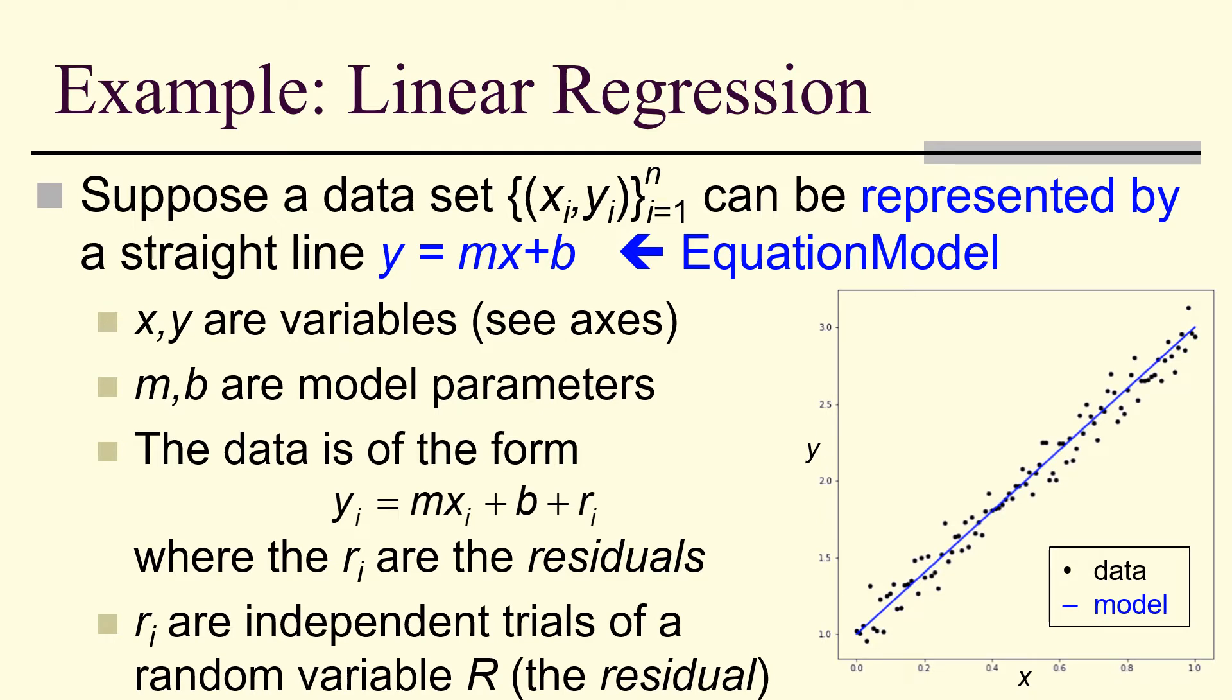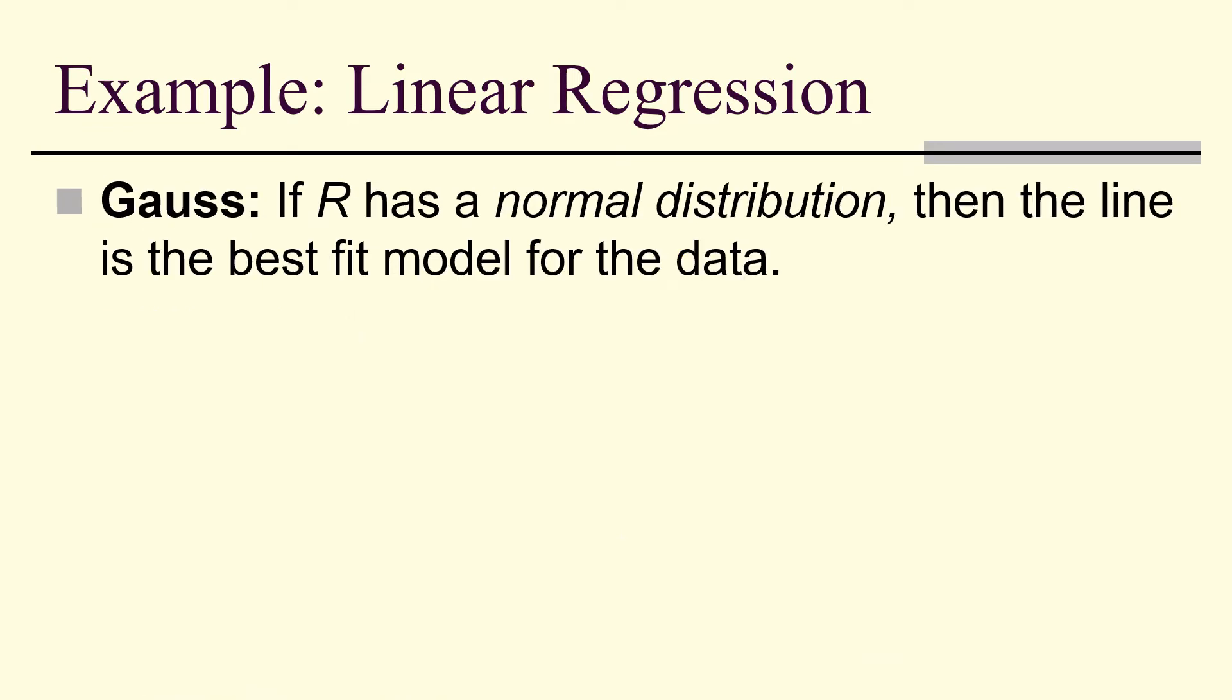And we tend to think of these residuals as all being independent trials of a random variable, r. And Gauss said that if this r has a normal distribution, then we get a line that's the line of best fit for the data.